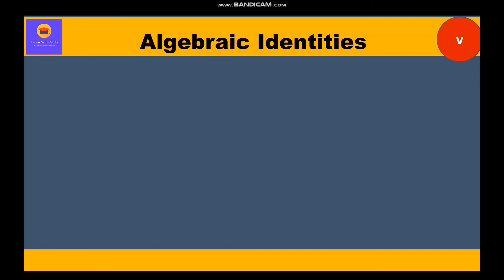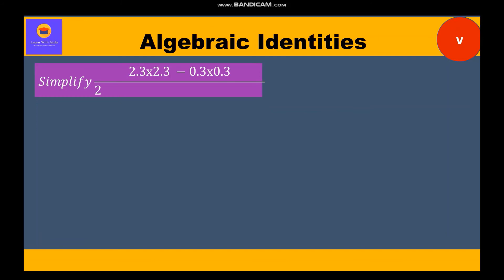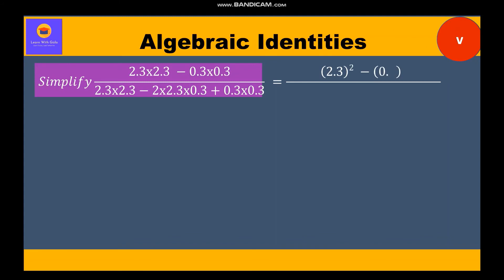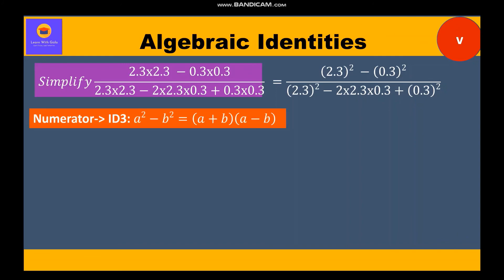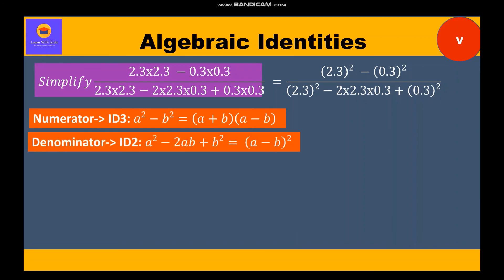Now let's move to the fifth question: simplify 2.3 × 2.3 minus 0.3 × 0.3 upon 2.3 × 2.3 minus 2 × 2.3 × 0.3 plus 0.3 × 0.3. Only two numbers are used: 2.3 and 0.3. This can be written as 2.3 whole square minus 0.3 whole square upon 2.3 whole square minus 2 into 2.3 into 0.3 plus 0.3 whole square. In the numerator it is identity 3, which is a square minus b square with factors a plus b into a minus b, whereas in the denominator it is identity 2.